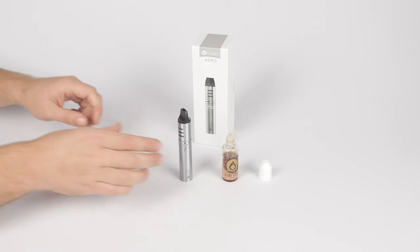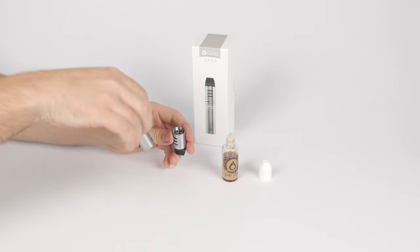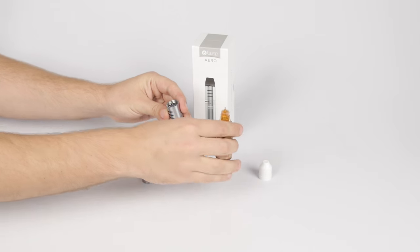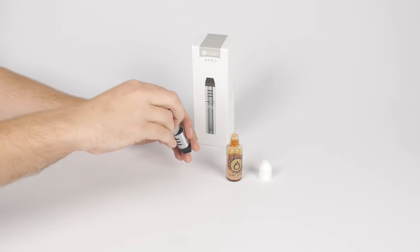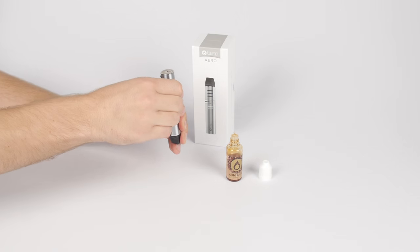To fill your AERO, unscrew the atomizer tank from the base and battery while holding your device upside down. Hold the tank at a slight angle and pour the liquid around the outside of the center column. Make sure that the tank is always more than one third full. Screw the atomizer tank back onto the base and battery.